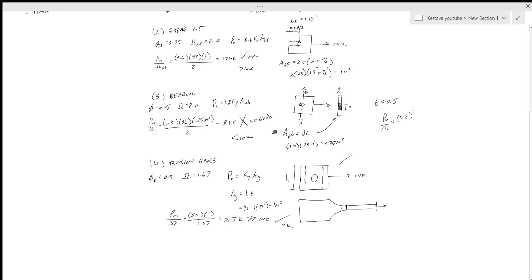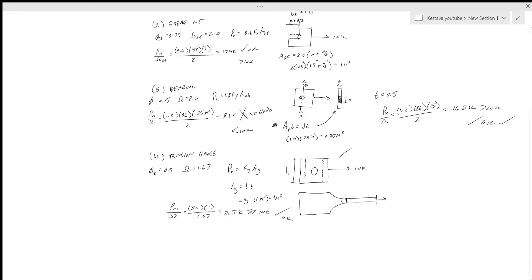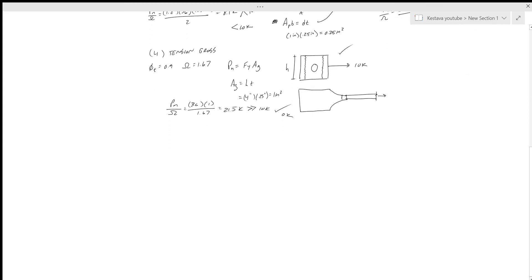Because what happened is if you had t equals 0.5, now P_n equals 1.8, 36, 0.5 over 2, which means it doubles, so it gets you 16.2 kips, which is greater than 10 kips. So that would work out. Okay, so we'd be fine with that. So there's a small fix for you if you needed to run the bat.